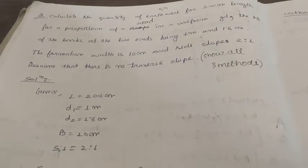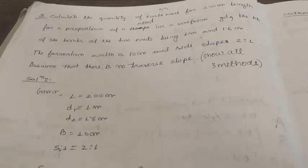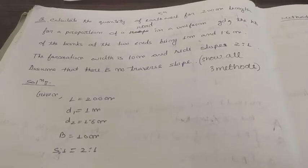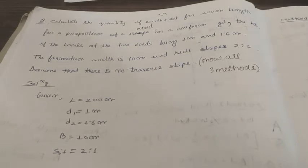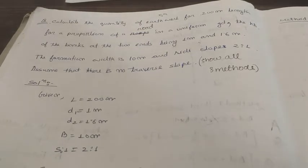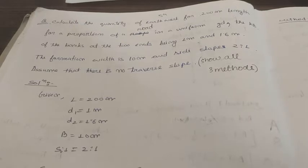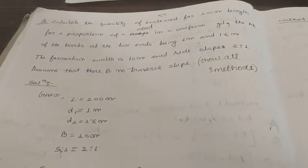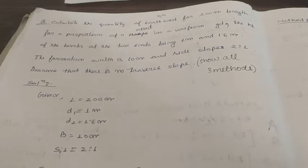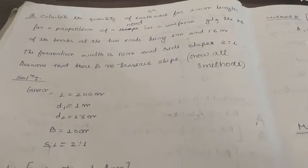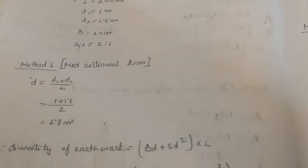Assume that there is no transverse slope and show all three methods. What is given: the length is 200 meters, two depths are given - one height is 1 meter and another is 1.6 meters, so d1 = 1m, d2 = 1.6m. Formation width B = 10 meters and the side slope s:1 is 2:1.